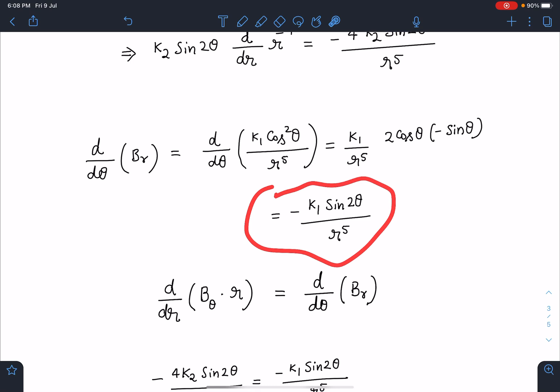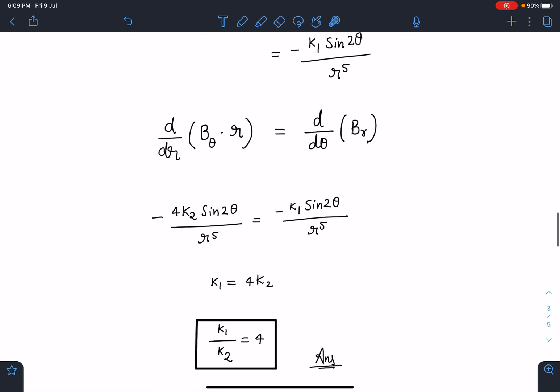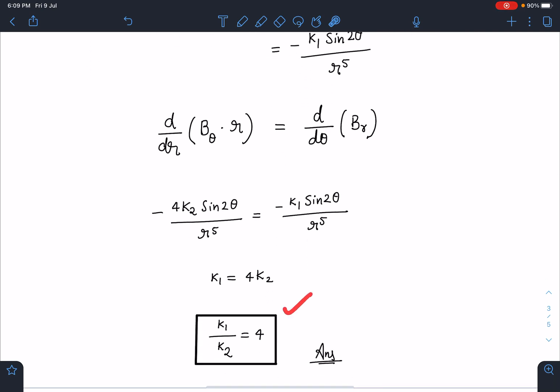So this will give us minus k1 sin 2 theta by r to the power 5. When I equate these two values, I am getting k1 by k2 ratio as 4. This is going to be the final answer for this question. And guys, this is very important for JEE Advanced type of exam.